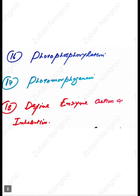The sixteenth question is: define photophosphorylation — what is it? The seventeenth question is: what is photomorphogenesis? The eighteenth question is: define enzyme action and inhibition.